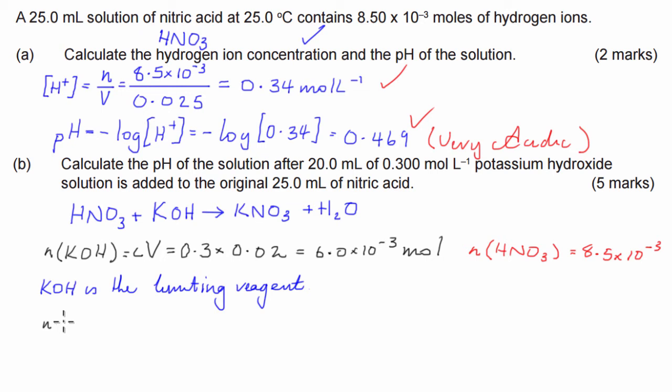So basically what happens now is the final pH of the solution is going to be calculated from the remaining hydrogen ions that are going to be left after all of the hydroxide has been reacted. So we can say the number of moles of HNO3 remaining is equal to this one, subtract this one. So we're going to have 8.5 times 10 to the negative 3, subtract 6 times 10 to the negative 3. So that's equal to 2.5 times 10 to the negative 3. Cool.